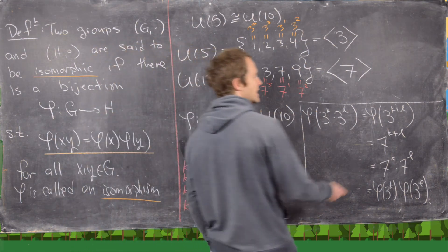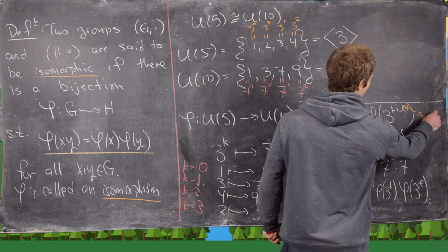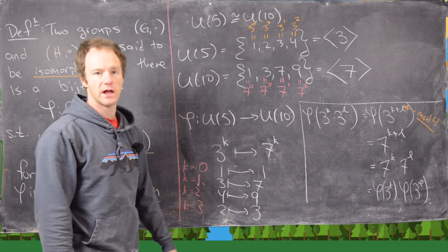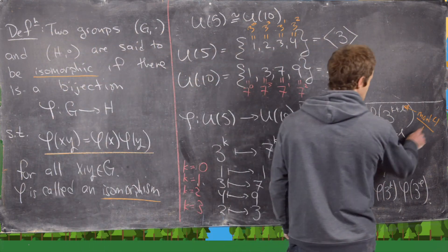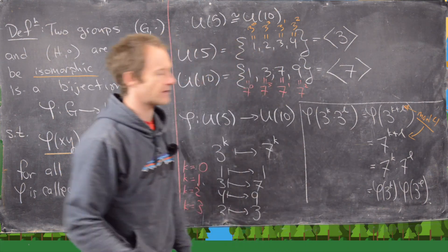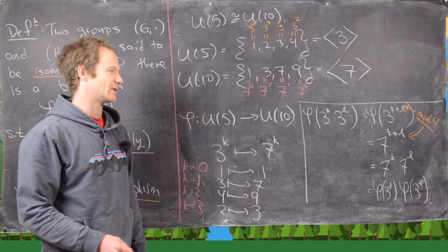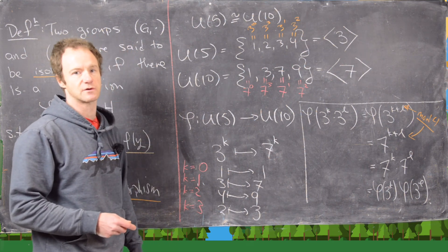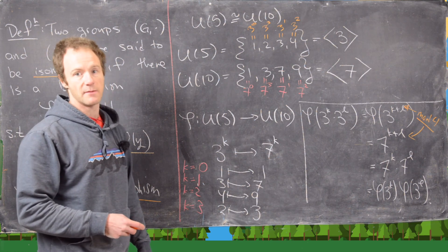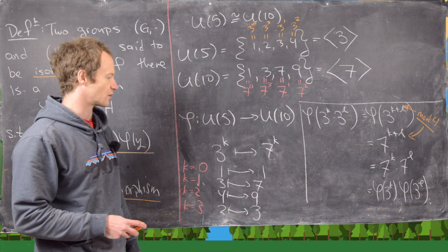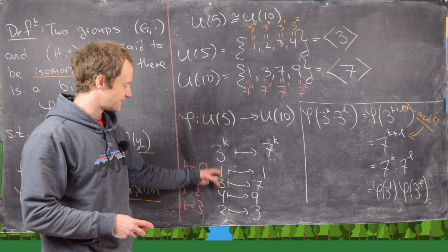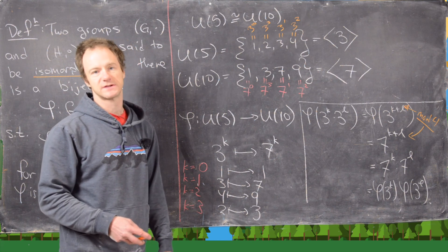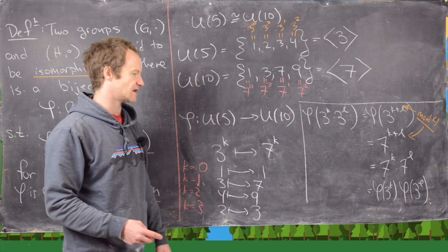Note that the arithmetic in the exponents is happening mod 4, since 3⁴ = 1 in U₅, and similarly for U₁₀ — that's an important piece of the puzzle. Another way to verify this isomorphism would be to write out and compare the Cayley tables for both groups, and I'll leave that to you to check.